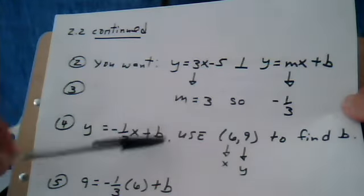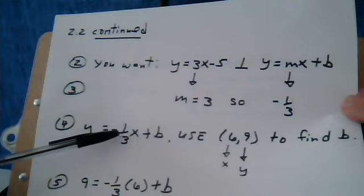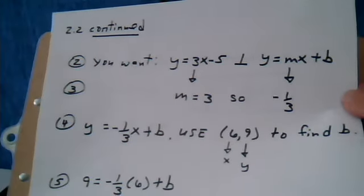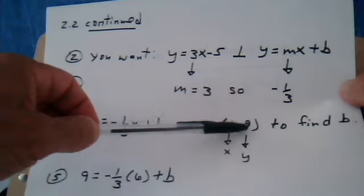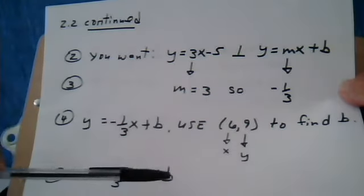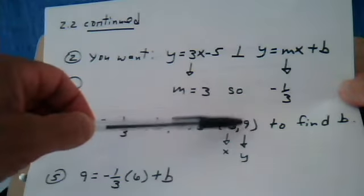So this is the line that we're constructing. So now we have the slope of the line we are coming up with. Now use the point they gave you to find the b. So 6 is the x and 9 is the y. Plug them in.